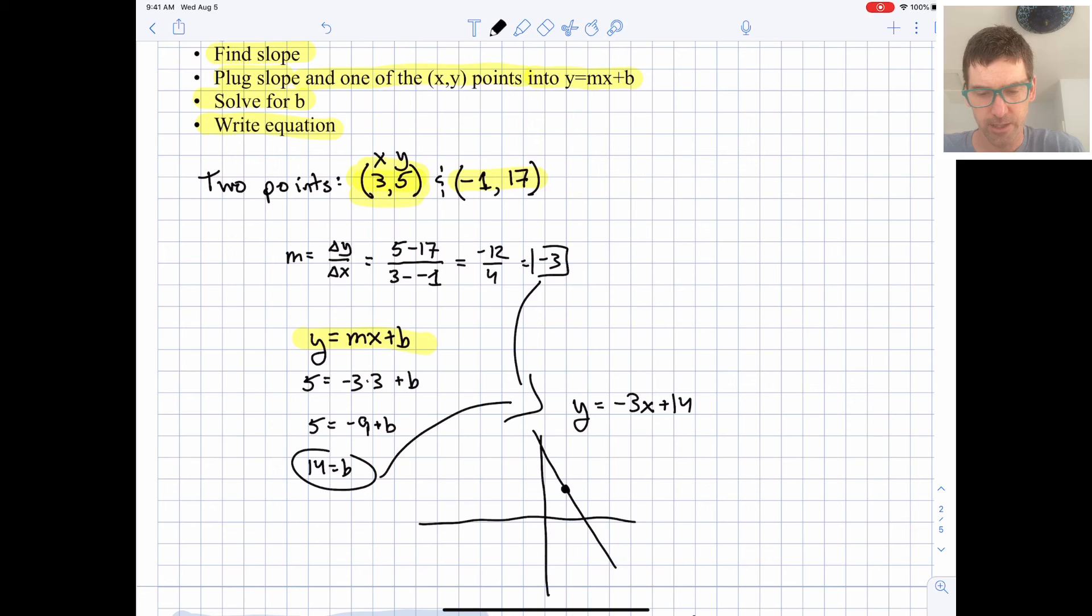And the second point, negative 1, way up 17, yeah, that seems to make sense too. So a quick rough visual is a reasonable way to check. So there's our final solution right there, negative 3x plus 14.